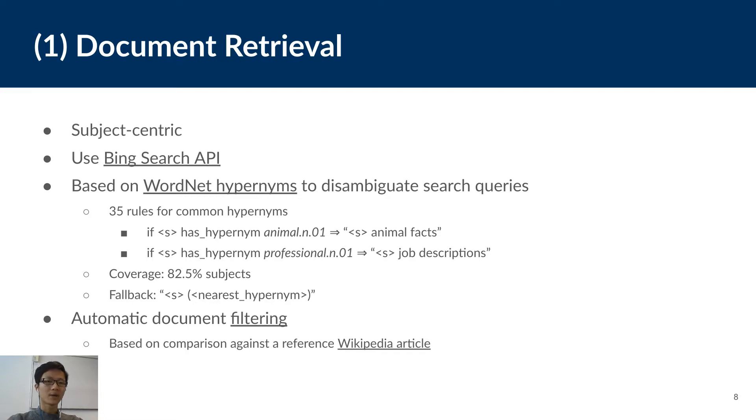First, to retrieve documents relevant to a given concept, we use the Bing Search API. To deal with ambiguous terms, we use WordNet hypernyms to define our search queries. For example, if concept S has hypernym animal, then its search query will be S animal facts. For the hypernym professional, we produce the search query as job descriptions. And we have manually designed 35 rules for the most common hypernyms, which cover 82% of the primary subjects in our KB. And when no rules can be applied, we simply pick up the nearest hypernym for this purpose.